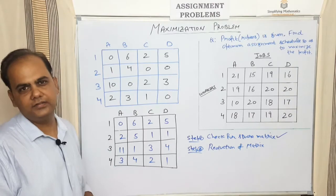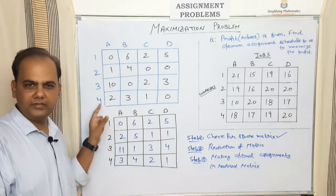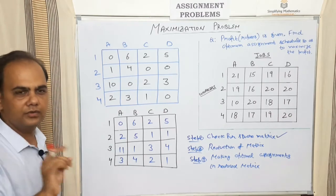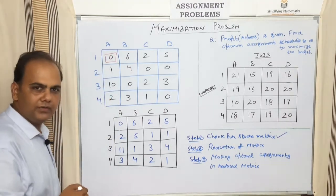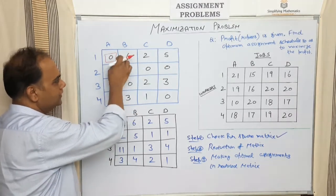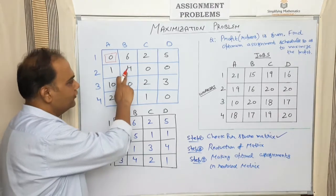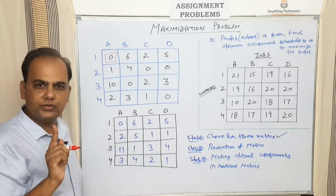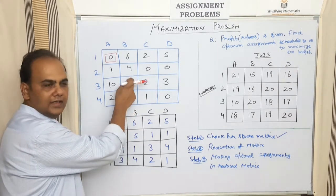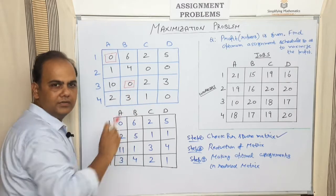The next step after matrix reduction is making optimal assignments in the reduced matrix. Look for a single zero in the first row — if there is one zero, put a square on that zero, and cross out any other zero in that same row or column. Moving to the second row: there are two zeros, so leave it and move to the third row. In the third row there is a single zero — assign it, and cross out corresponding zeros in that row and column.